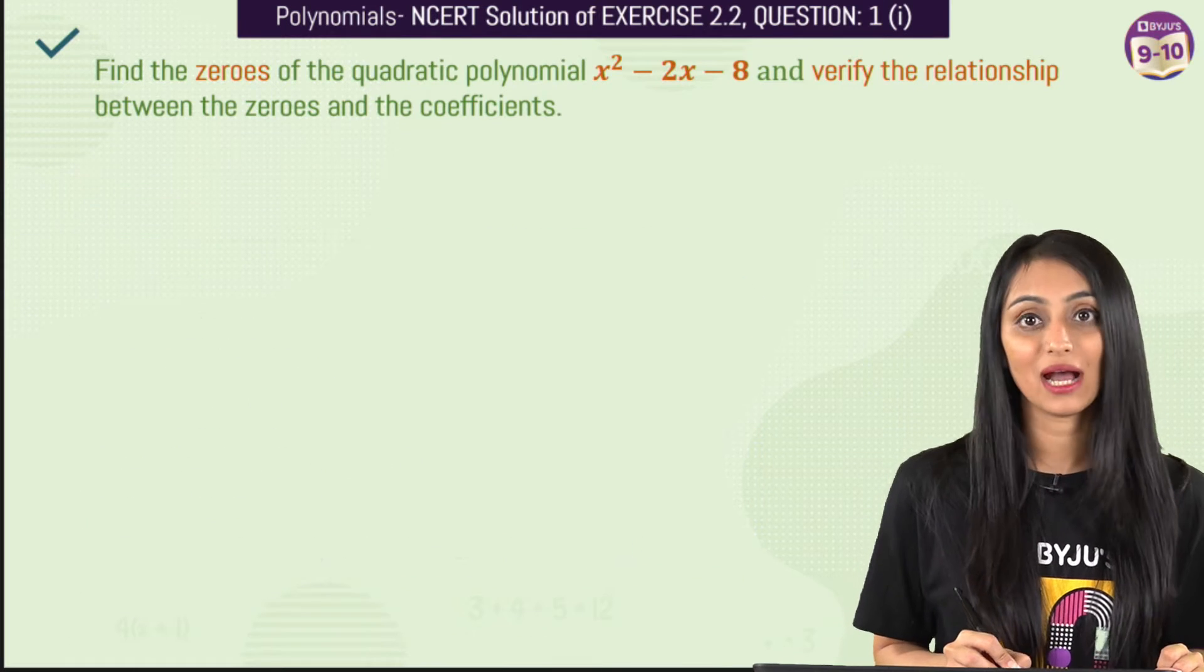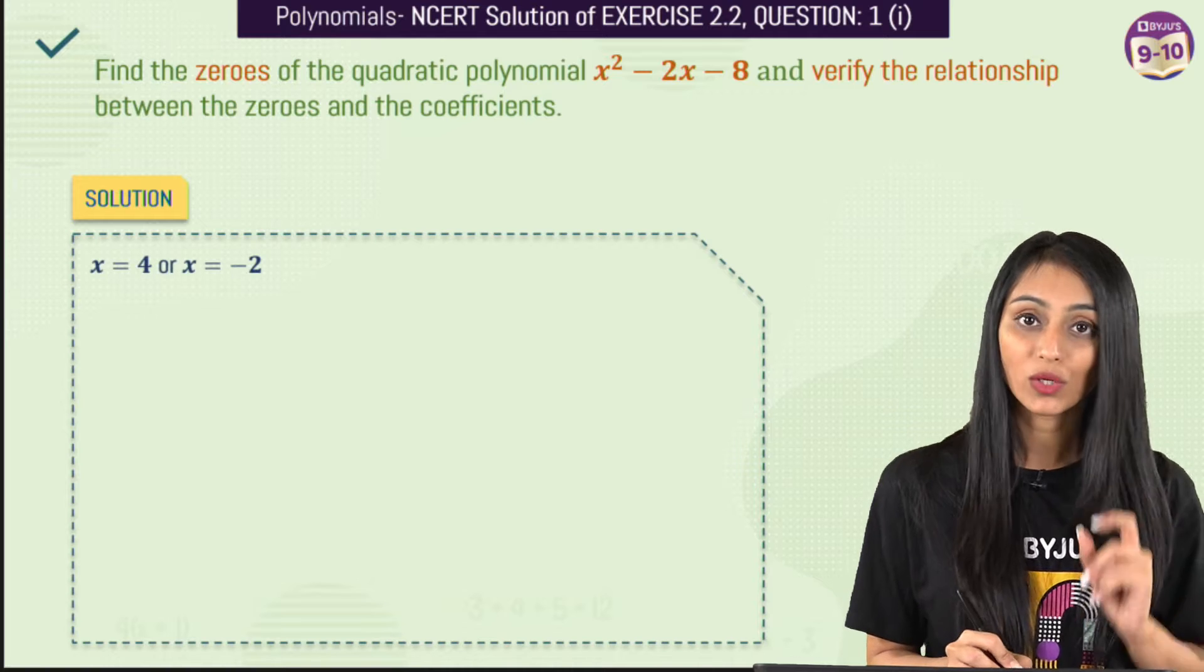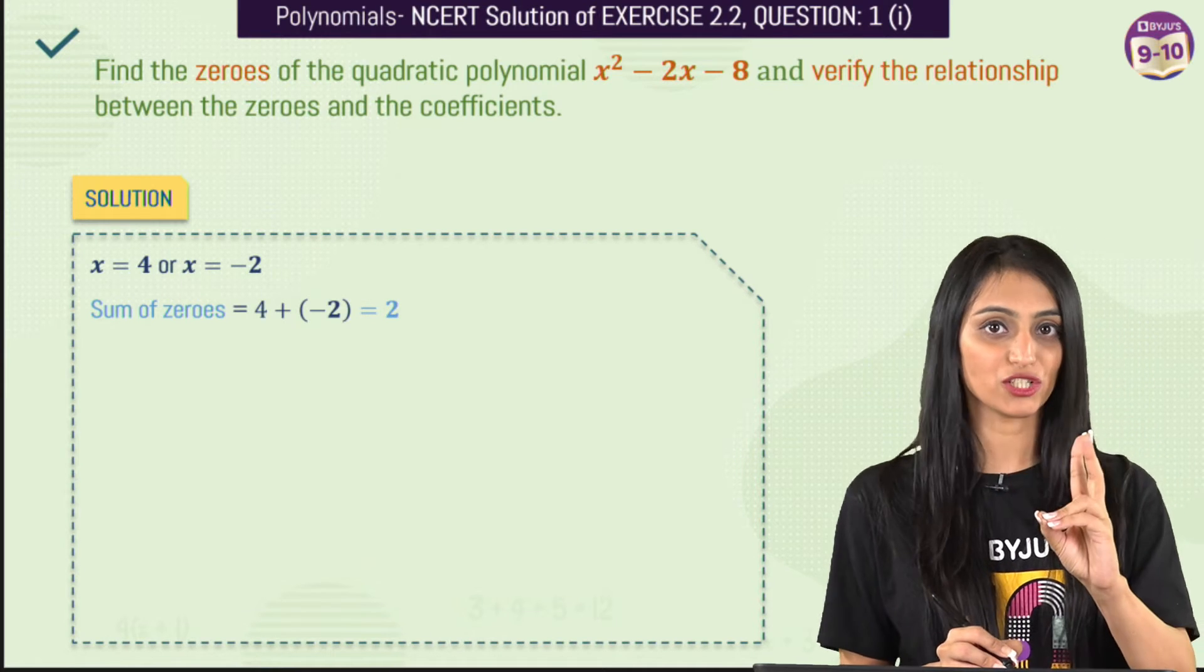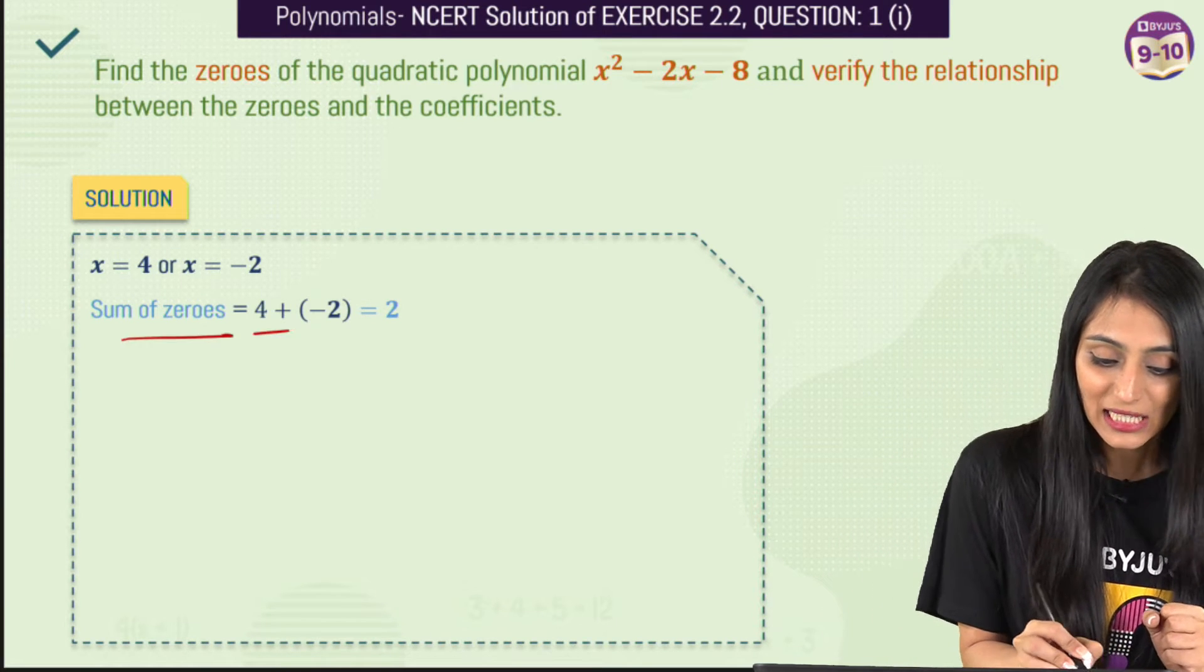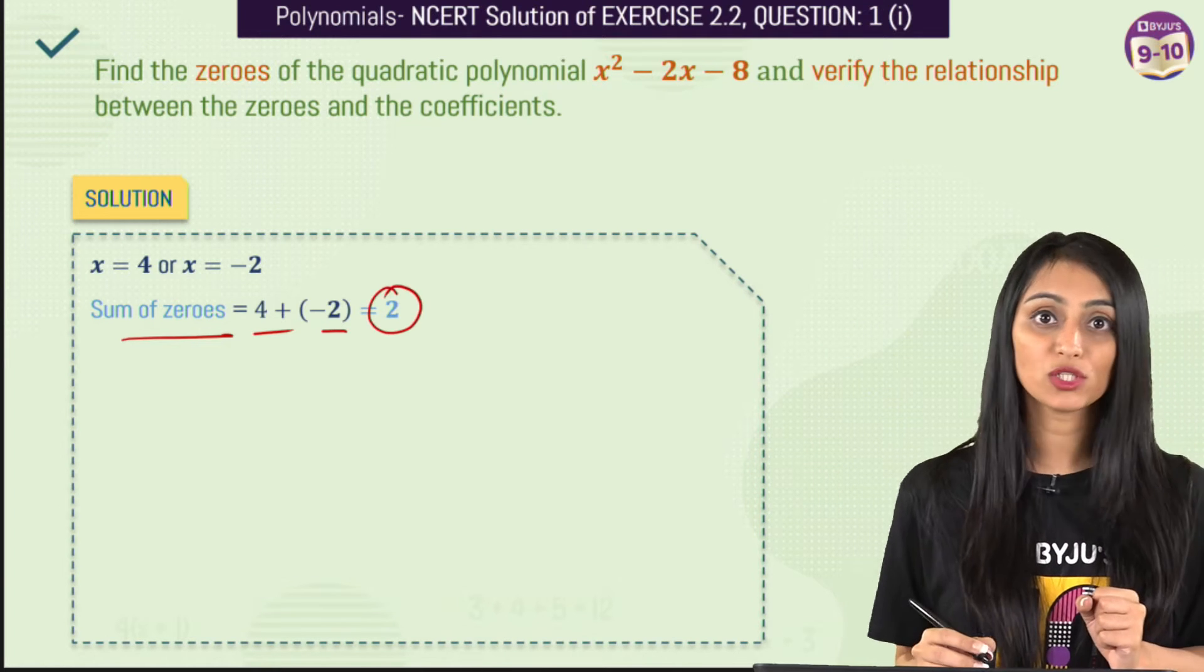Now coming to the next part where we have to verify the relationship, so for that what we will do here is, first of all there are two relationships. The first is sum of zeros. Let's find the sum of these zeros. So 4 plus minus 2, that's going to be 2.